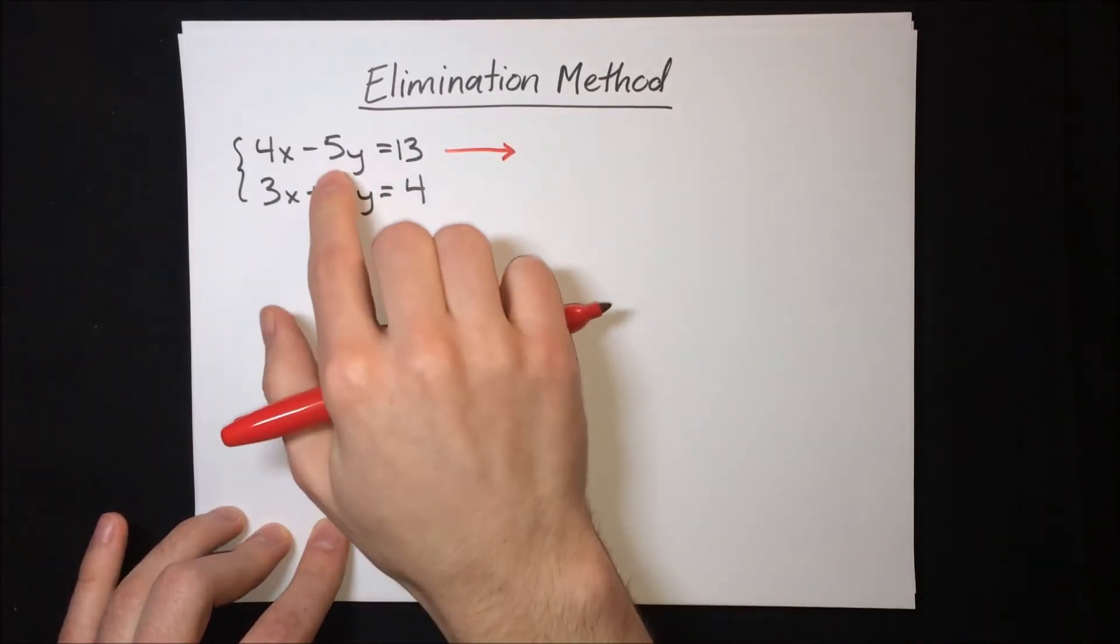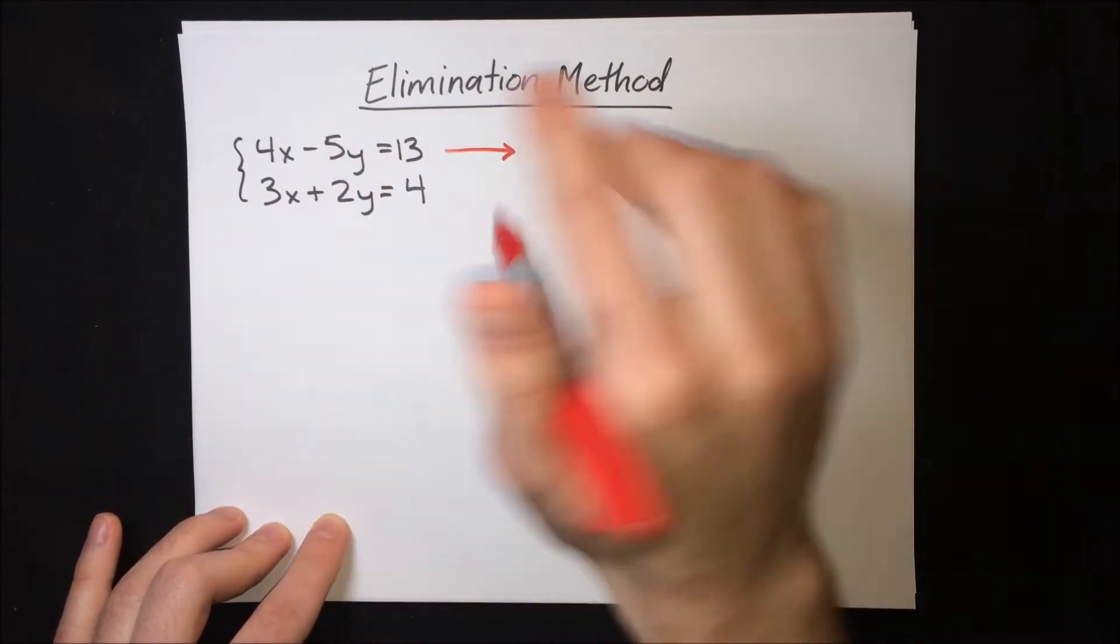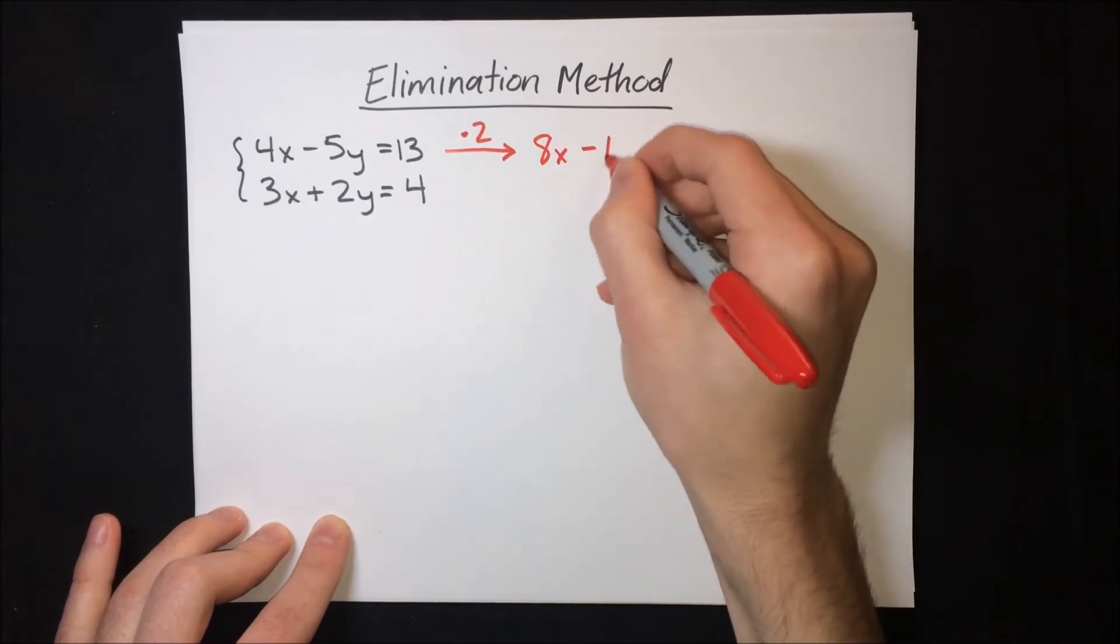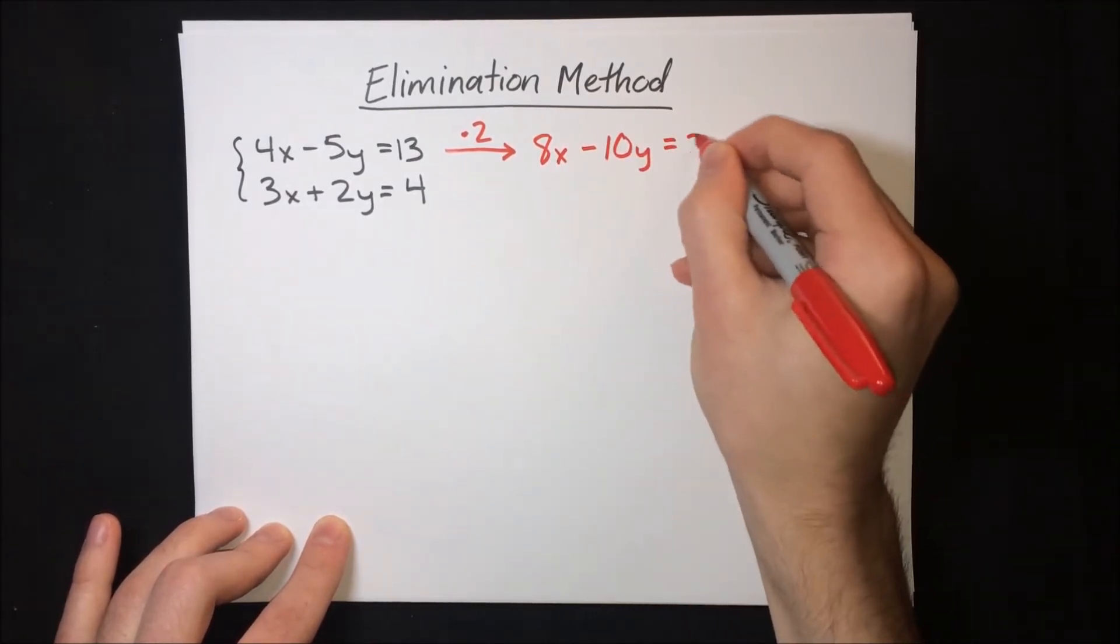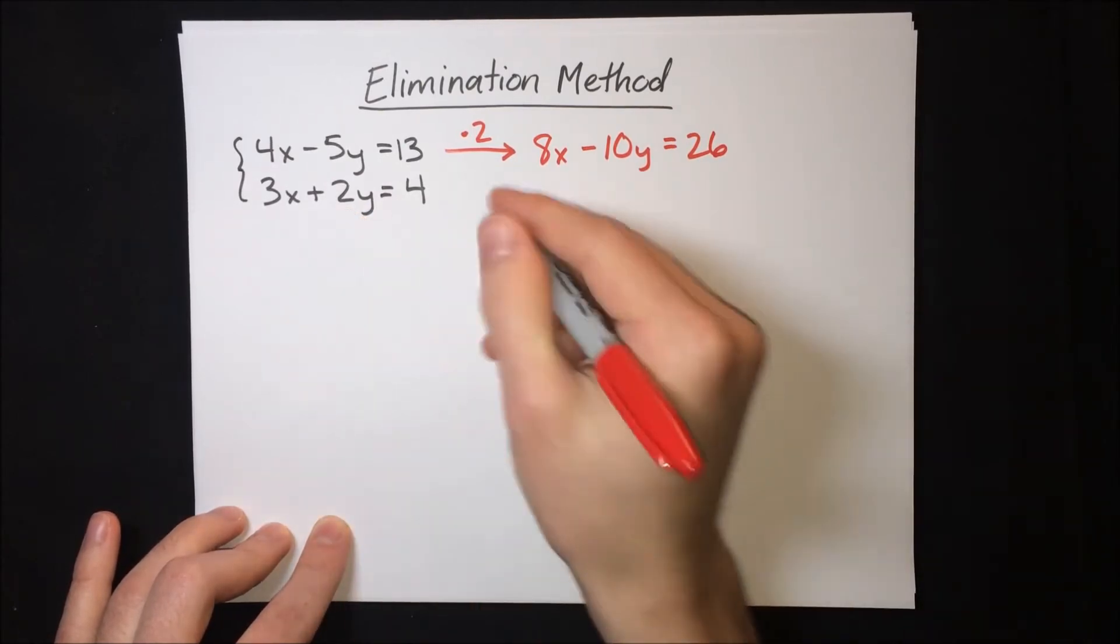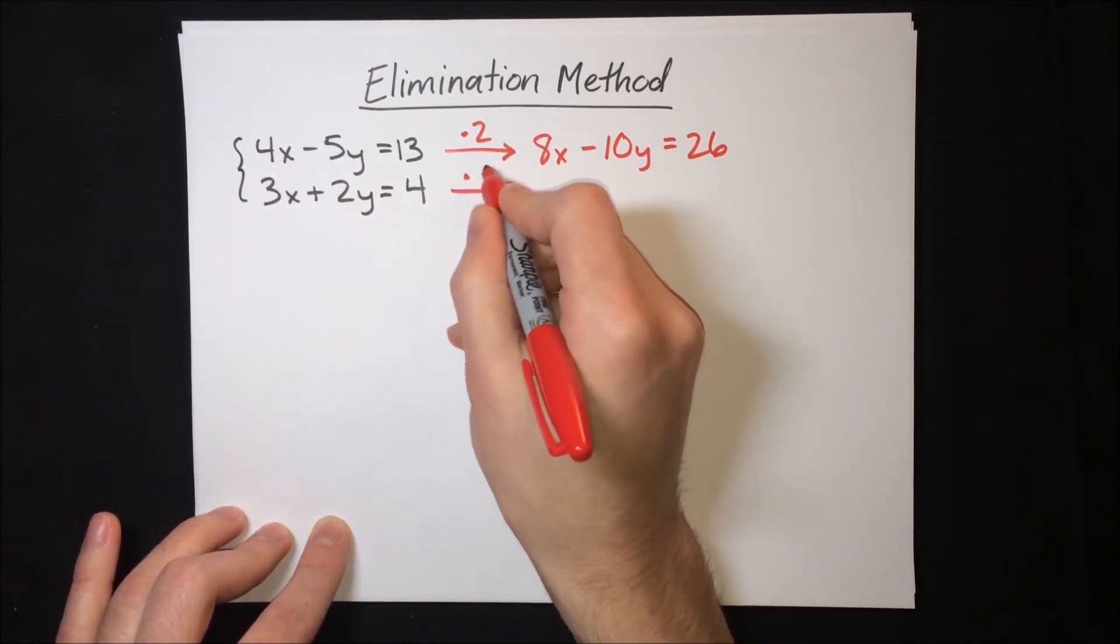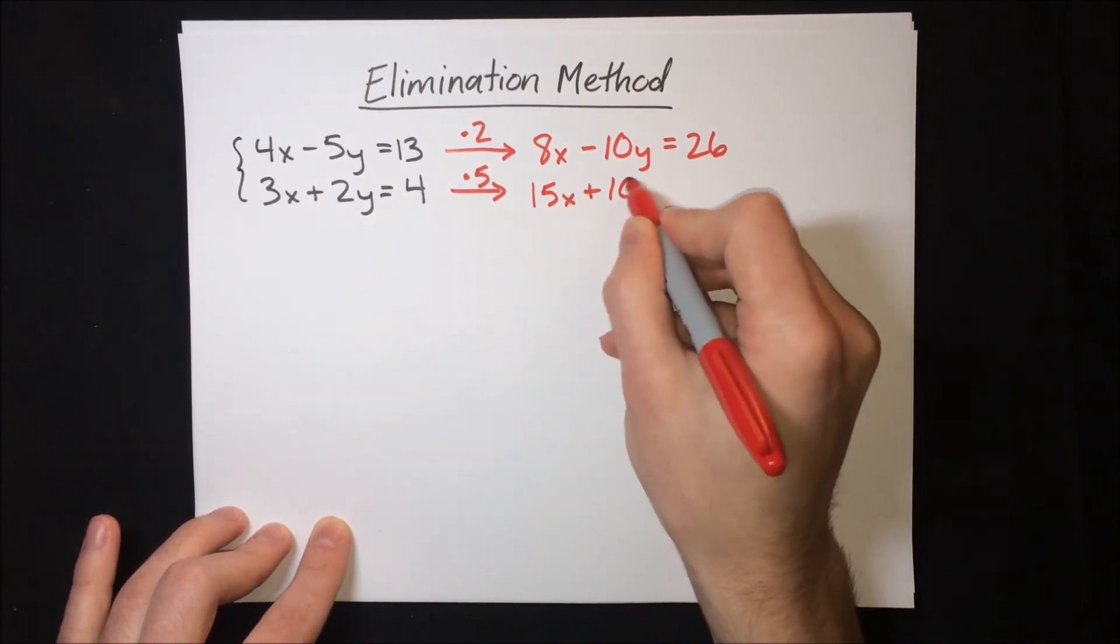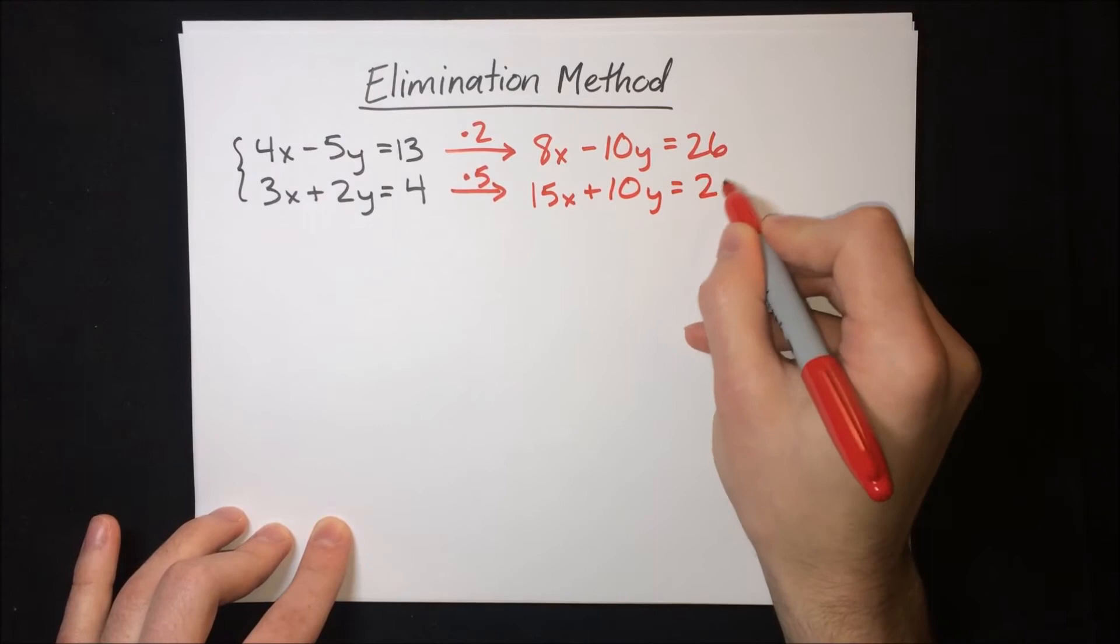To get this one to negative 10y, we have to multiply by 2. And then we get 8x minus 10y equals 26. To get this equation to have a positive 10y, we have to multiply by 5. And then we have 15x plus 10y equals 20.